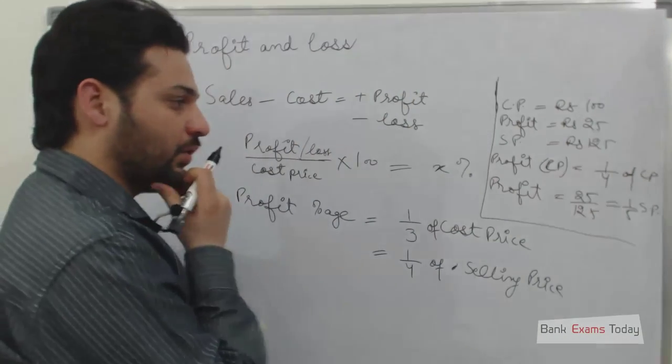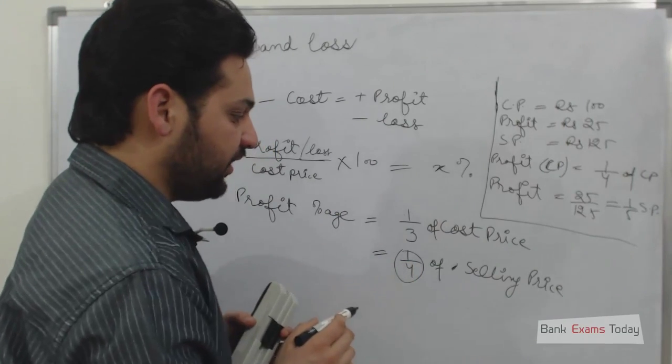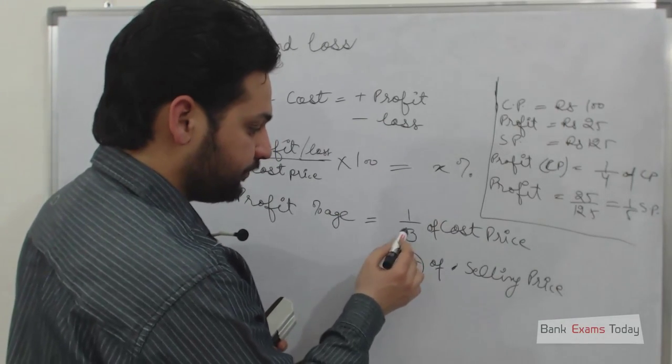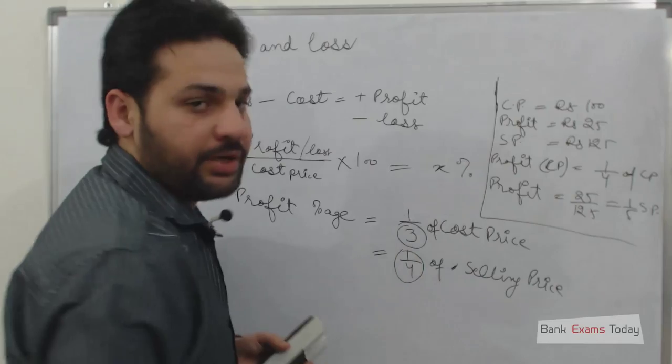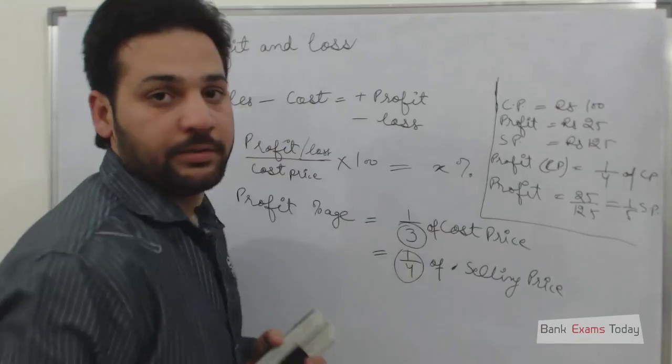Whenever we need to calculate the profit fractions, then simply we need to add one in the denominator in case of profit, and if there is a case of loss, then we need to deduct one.